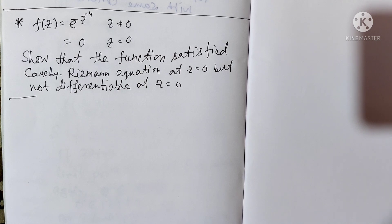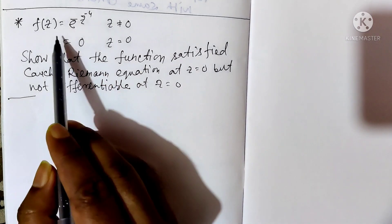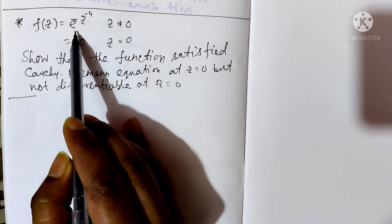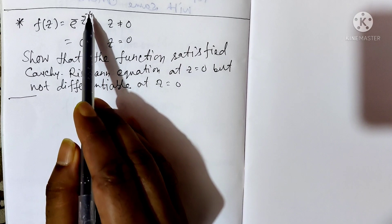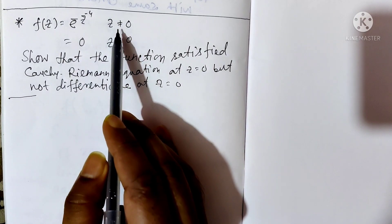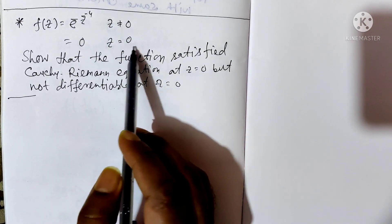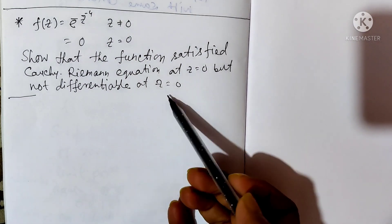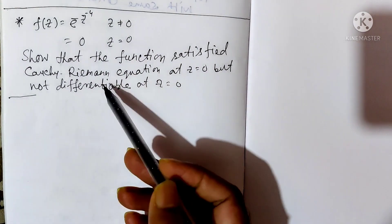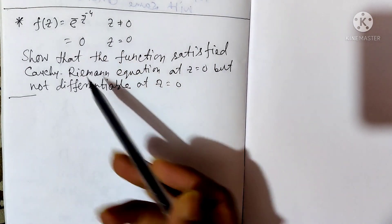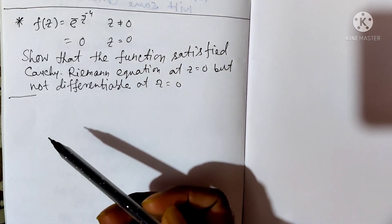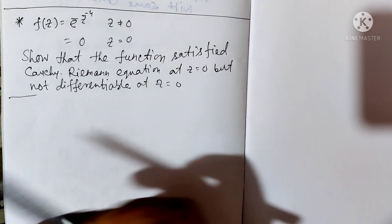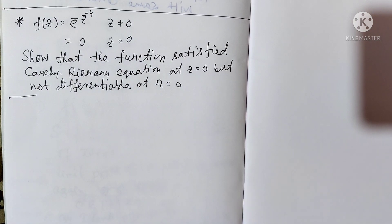In this video, we show that the function f(z) = e^(-z^(-4)) when z ≠ 0, and 0 when z = 0, is not differentiable at z = 0, but the Cauchy-Riemann equations are satisfied at z = 0.